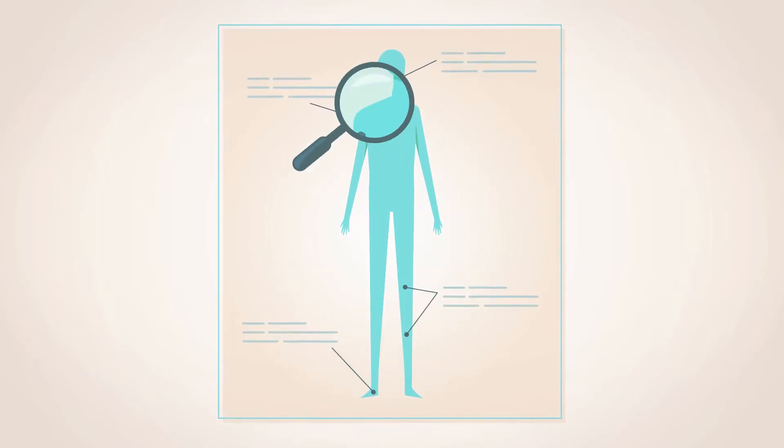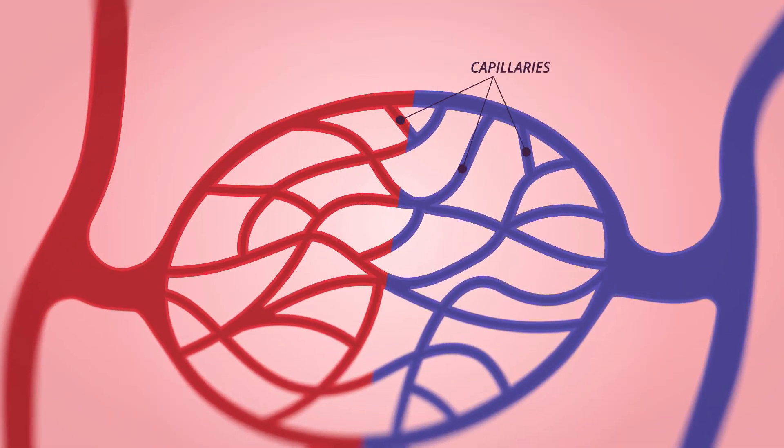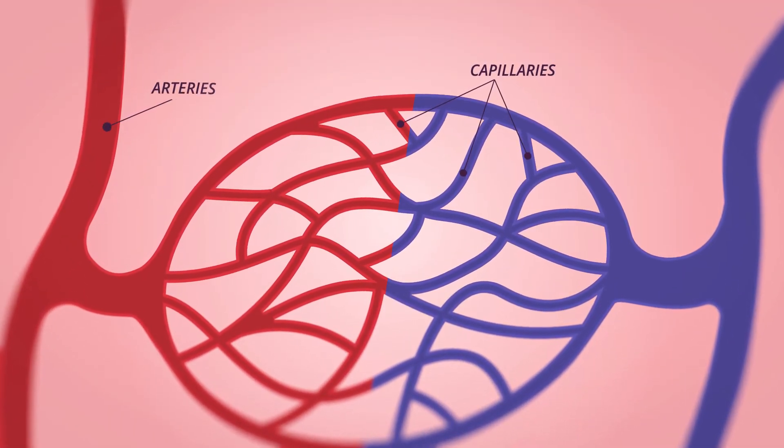However, there's another type of bleed that is so small it goes unnoticed. These microbleeds occur in capillaries, blood vessels even smaller than our arteries and veins.